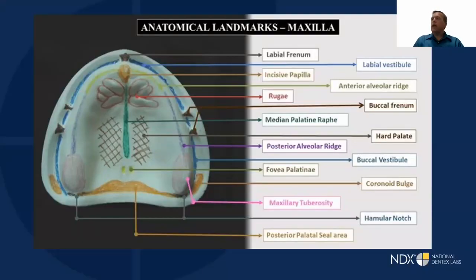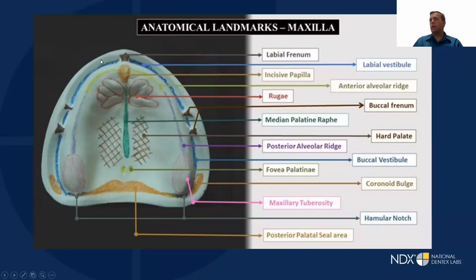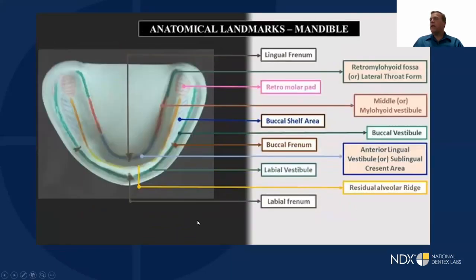When taking a denture impression, there are a variety of landmarks we need to do a good job: the whole vestibule, the tuberosities, the hamular notch, and the vibrating line so we can end the denture in the correct spot. Dentists have far more anatomic knowledge than most lab technicians, so if you can help your laboratory by pointing out where you'd like the prosthesis to end, it produces a much more predictable result. On the mandible, the retromolar pad is often not picked up — it's important not only for border extension but also for setting the plane of occlusion halfway up the retromolar pad in a double arch case.